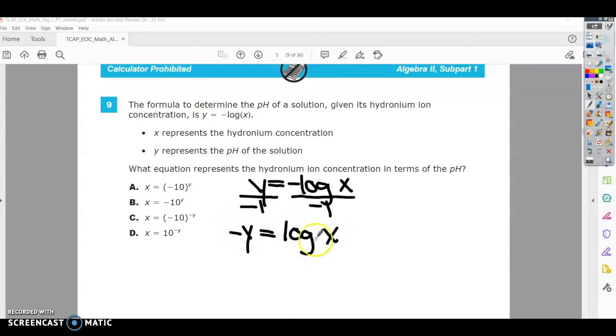When you don't have a base, it is assumed to be base 10. So to rewrite this, we're going to do base to this power equals this. So we're going to have 10 to the negative Y equals X. You can see that this one is